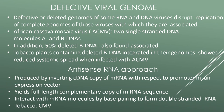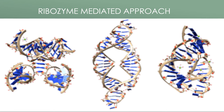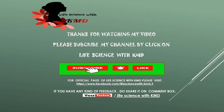Ribozyme-mediated approach: ribozymes are RNA molecules that exhibit enzyme activity. A hybrid RNA consisting of tobacco ringspot virus satellite RNA and a ribonuclease catalytic sequence is linked to antisense RNA specific to a target gene. The strategy consists of producing a ribozyme specific to part of the target virus genome, producing a cDNA of this ribozyme, and integrating it into the host plant genome.